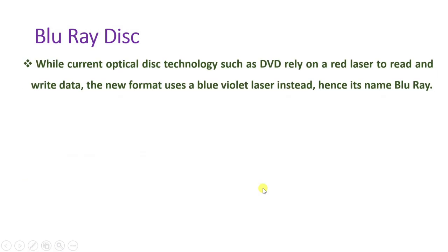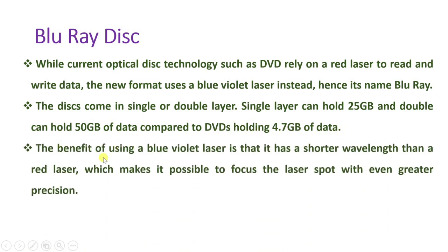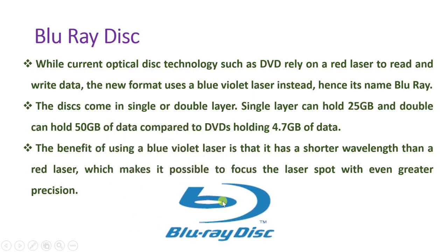Current optical discs such as DVDs use red color to read and write data, while the new Blu-ray format uses blue-violet laser — which is why it is called Blu-ray. The disc comes in single or double layer: a single layer holds 25 GB of data and a double layer holds 50 GB, compared to DVDs which hold only 4.7 GB. The shorter wavelength allows the laser spot to be focused with greater precision.